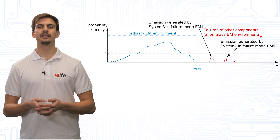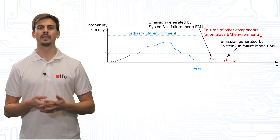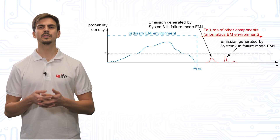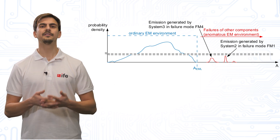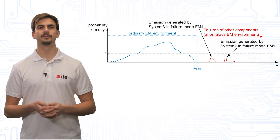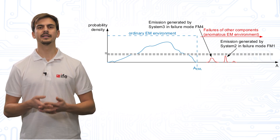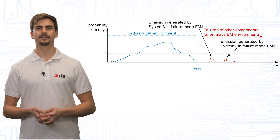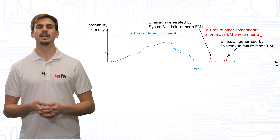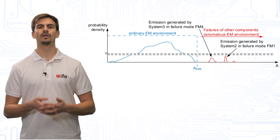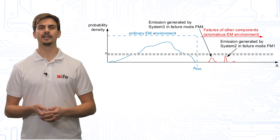We set the probability of the disturbance for the ordinary environment to 1, but above this limit we use the probability of the electromagnetic phenomena caused by faults. If the susceptibility of the system is below this limit, then there is a systematic failure in the system which has to be fixed. However, if the susceptibility of the system is above this limit, the probability information of the anomalous environment will be used in further safety analysis.